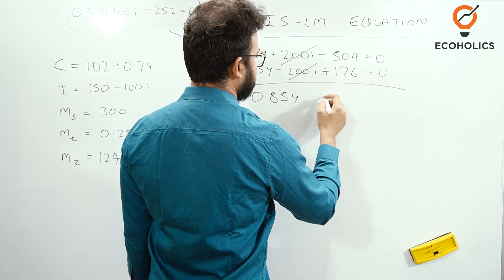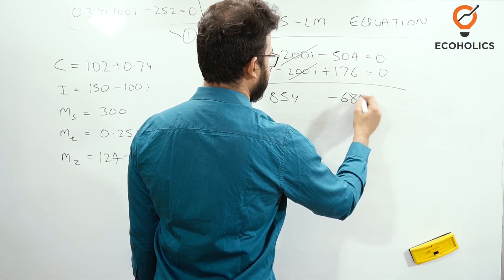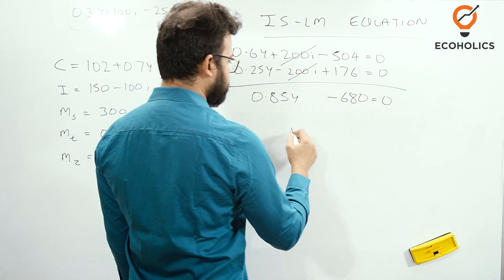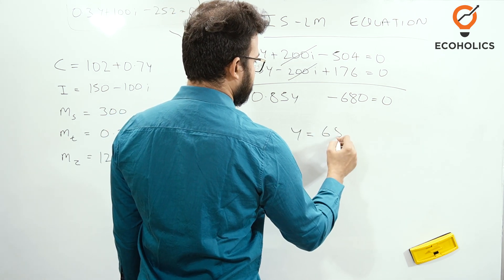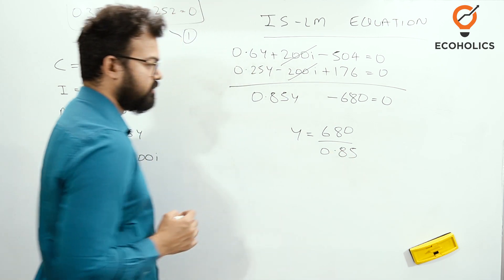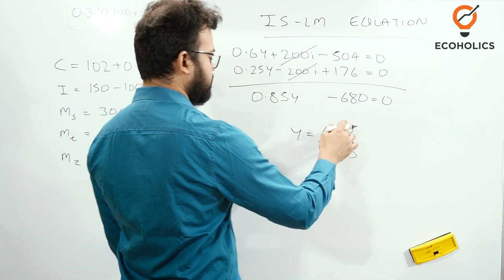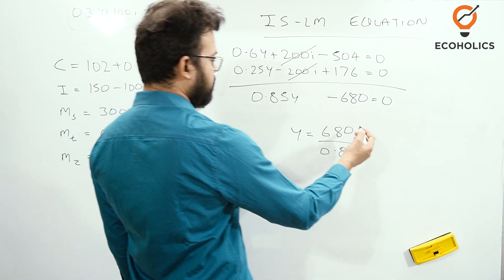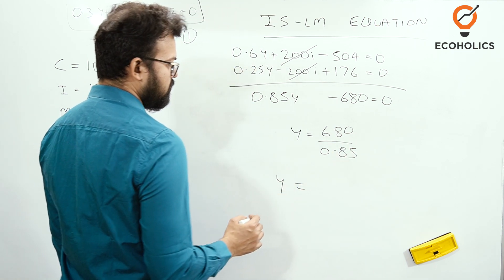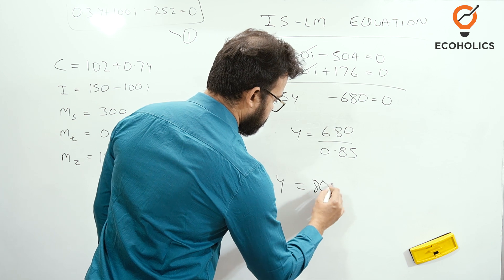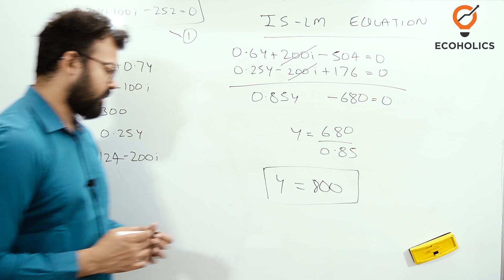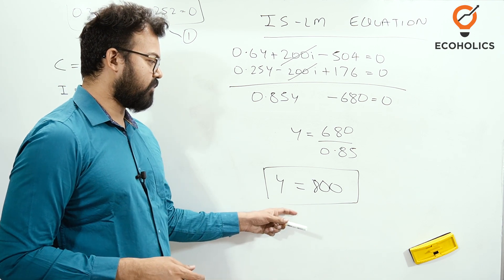So 0.85Y = 680. Therefore Y = 680 ÷ 0.85 = 800. The value of Y is 800.